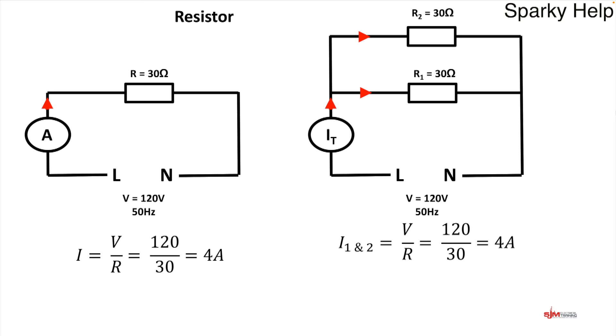If we put that in parallel now, because voltage remains the same in parallel, we can use Ohm's law. Work out the current in each branch and we work out I1 and I2 and it will become 4 amps apiece.